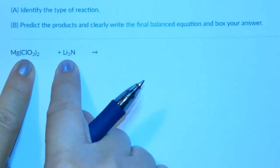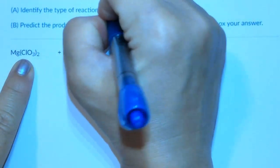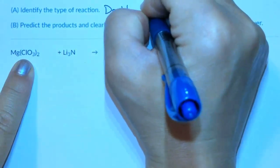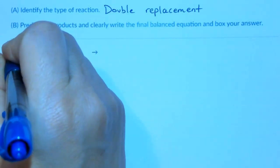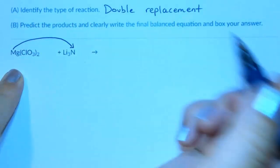We have an ionic compound and another ionic compound, which makes this a double replacement reaction. Now that we know that it's a double replacement reaction, we're going to put first and last together.